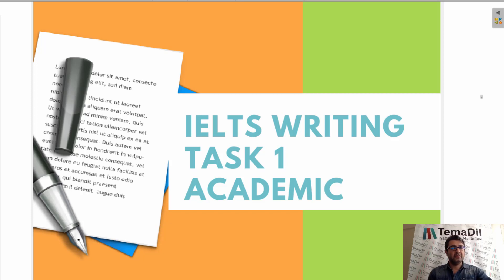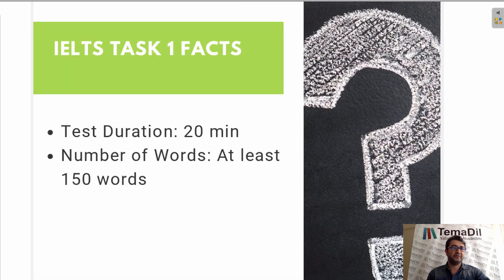Hello everyone, this is H. Gyrgin. Today I'm going to give you some information on IELTS Writing Task 1 Academic. Let's move on to some quick facts first. As you know, the test duration is 20 minutes and we are expected to use at least 150 words to accomplish the task.